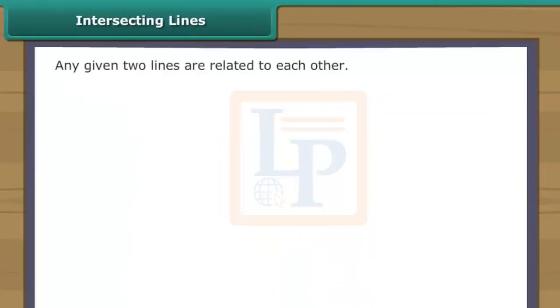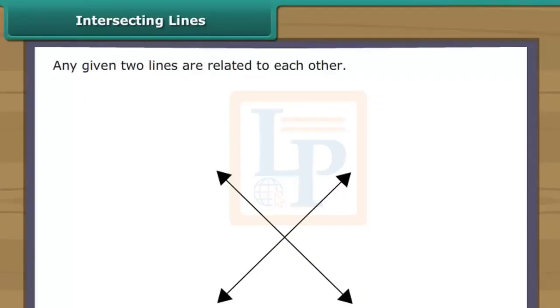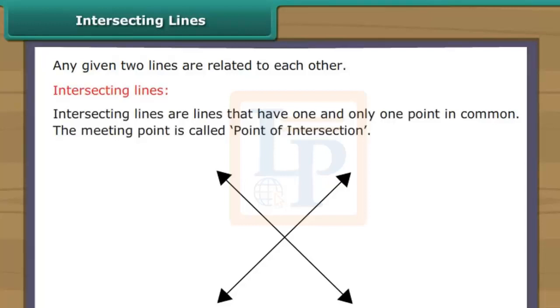Intersecting Lines. Two lines are related to each other in different ways. Let us look at each way separately. Intersecting Lines are lines that have one and only one point in common. This meeting point is called point of intersection.